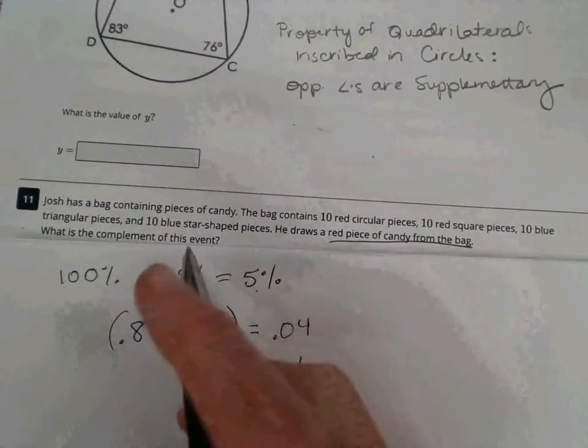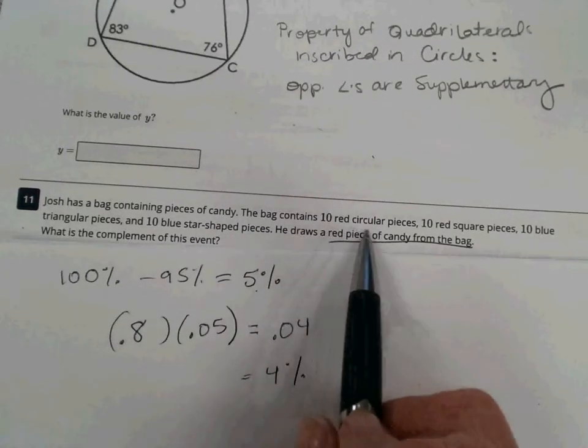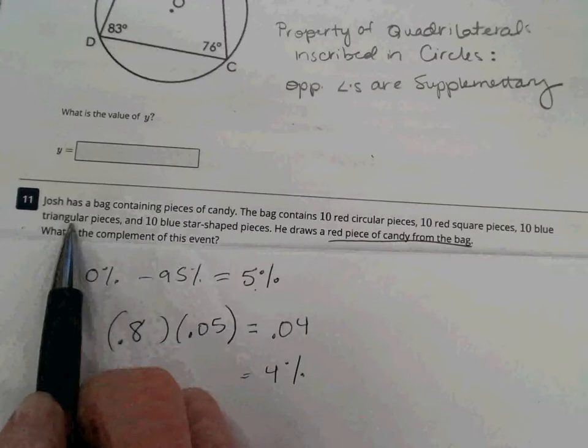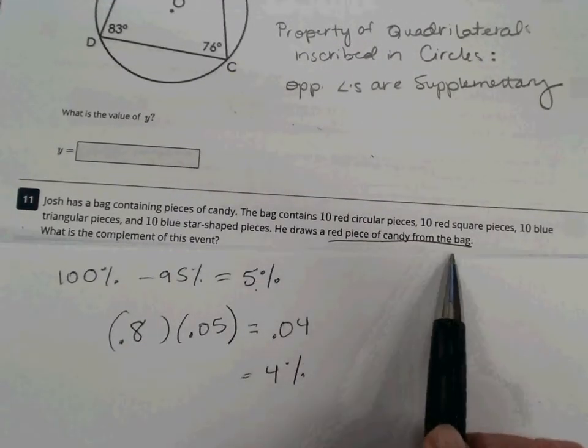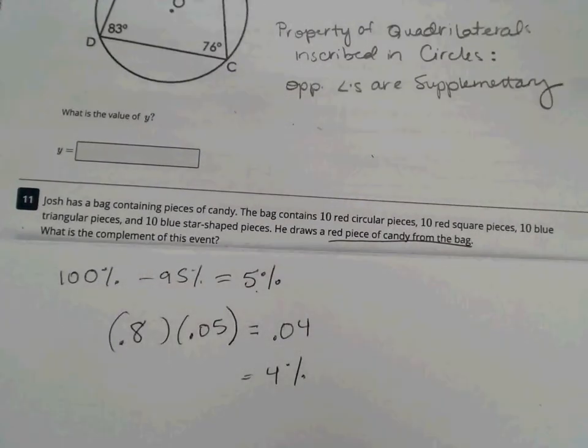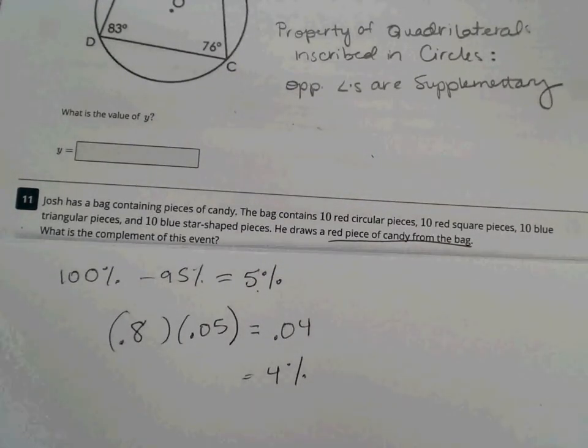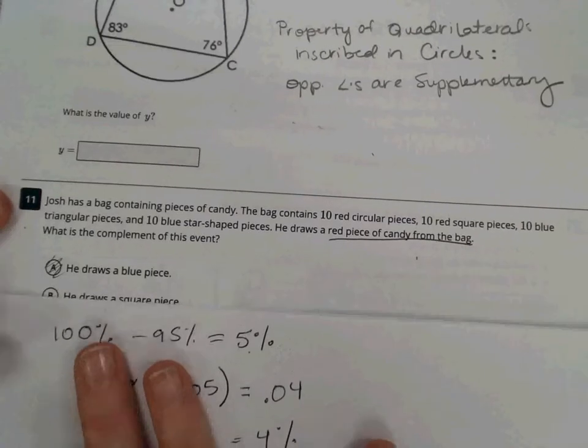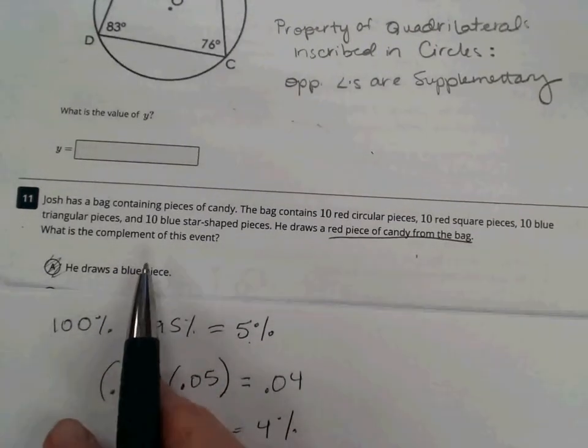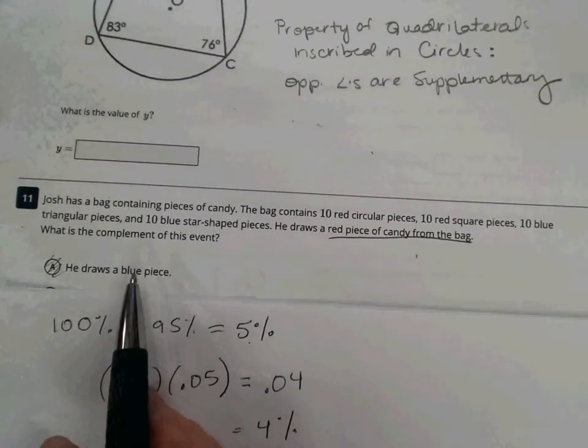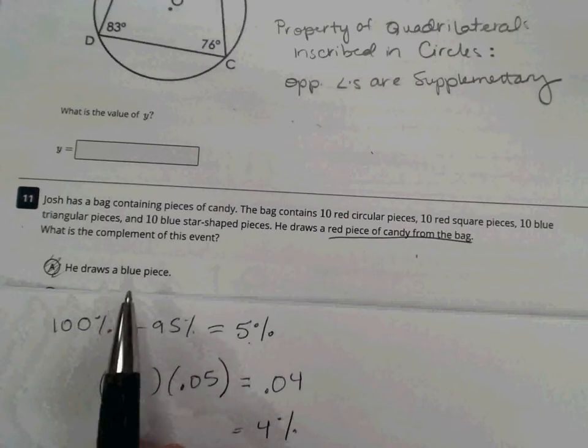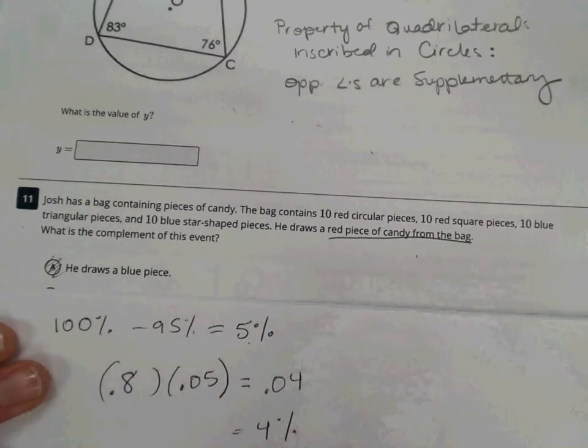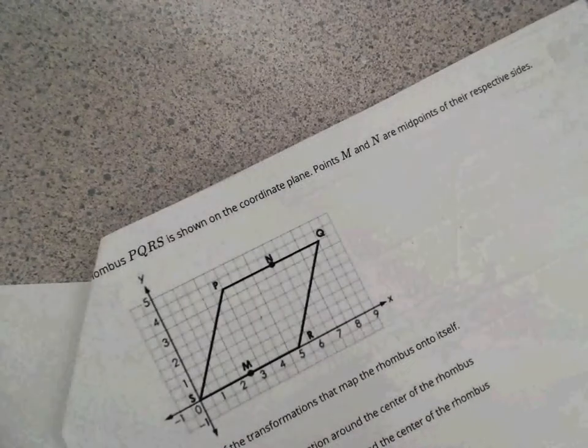Now, this next question, you probably already saw my answer. Josh has a bag containing pieces of candy. The bag contains 10 red circular pieces, 10 red square pieces, 10 blue triangular pieces, and 10 blue star-shaped pieces. He draws a red piece of candy from the bag. What is the complement of this event? The complement would be what is essentially not red. So, in this case, blue. So, we need to know that definition there of a complement of a given event would be the other option. And so, for this case, it would be that he drew a blue piece for question 11.